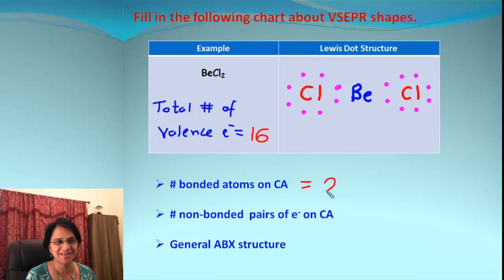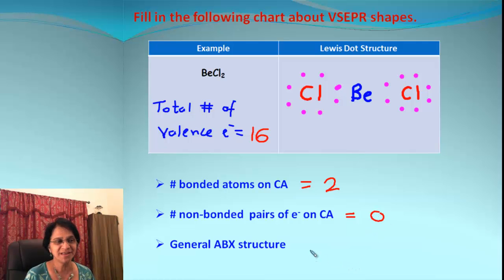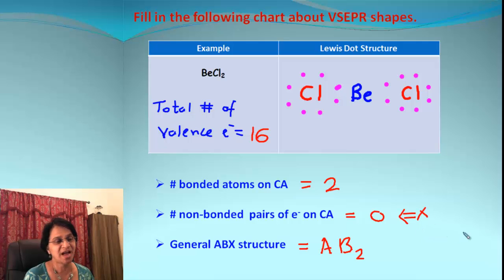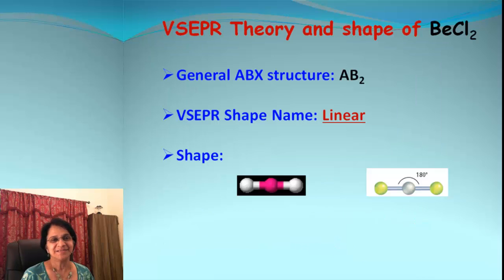For beryllium chloride: the number of bonded atoms on the central atom is two (two chlorine atoms), and the number of non-bonded pairs of electrons on the central atom is zero. The ABX formula: A is the central atom (one), B is the number of bonded surrounding atoms (two), and X equals zero, so we don't write it. The ABX formula is AB2.